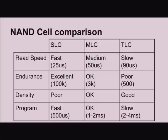I've summarized in this table what I was talking about. Read speed for SLC is pretty fast, and it gets worse the more bits you put in the cell, because you have to look at it and study it more closely. The endurance — this is how many times you can write and erase, or program and erase — in the literature this is called the number of P/E cycles.